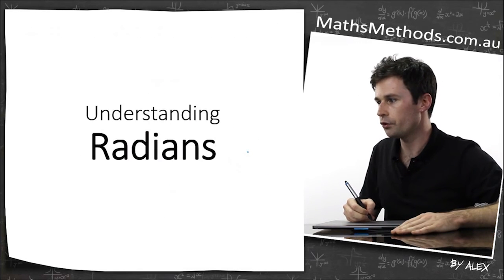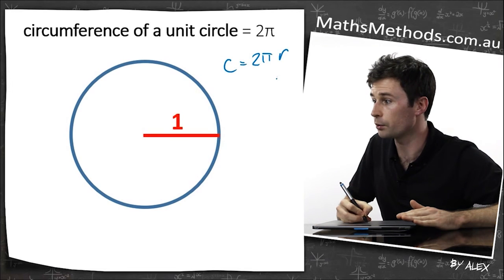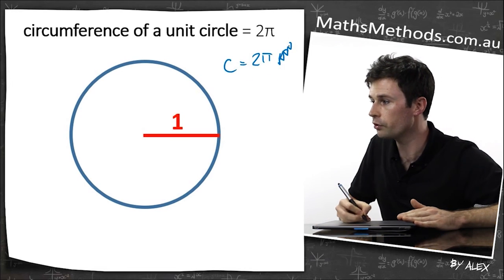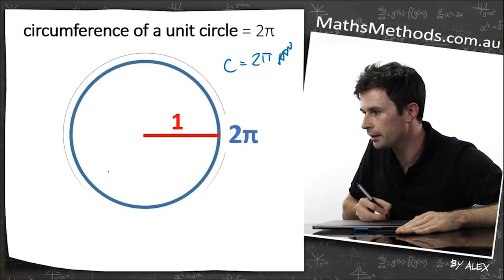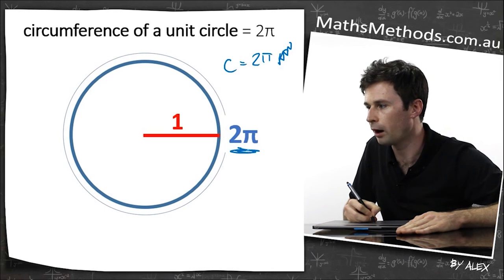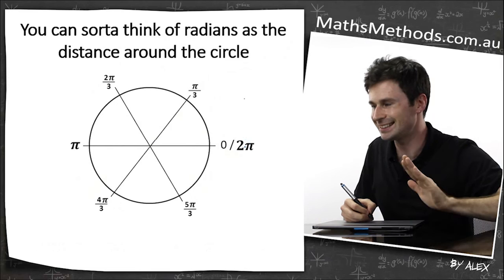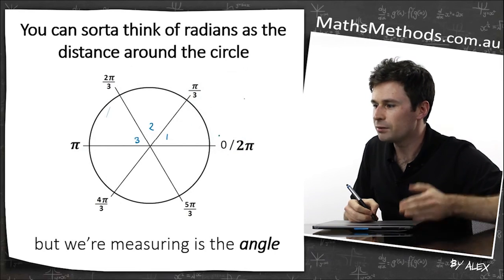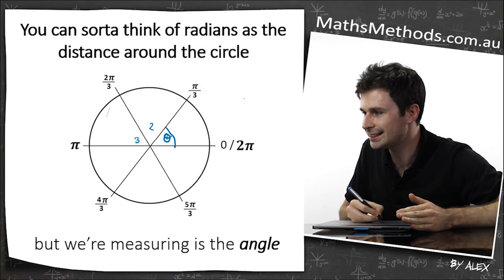So understanding radians. Circumference equals 2 pi r, r equals 1. The circumference just equals 2 pi. If we measured all around this, the length around there would be 2 pi. You can sort of think of radians as the distance around the circle. But we're measuring the angle. We're measuring this thing here.